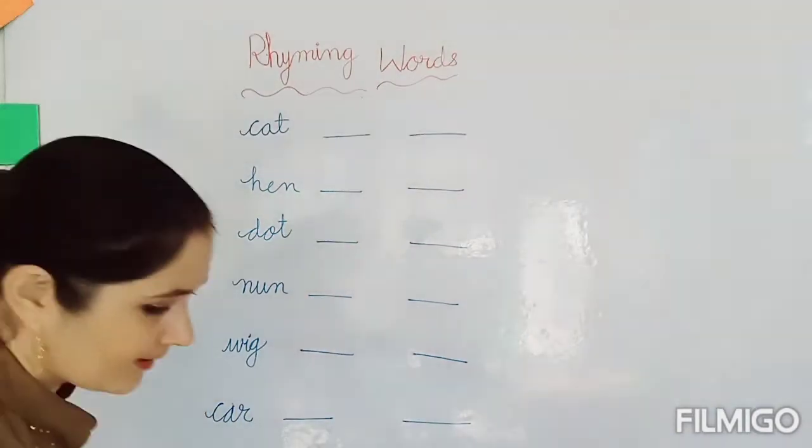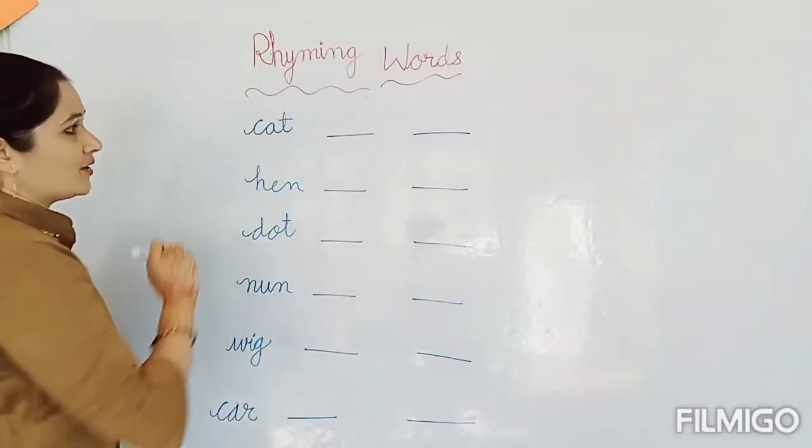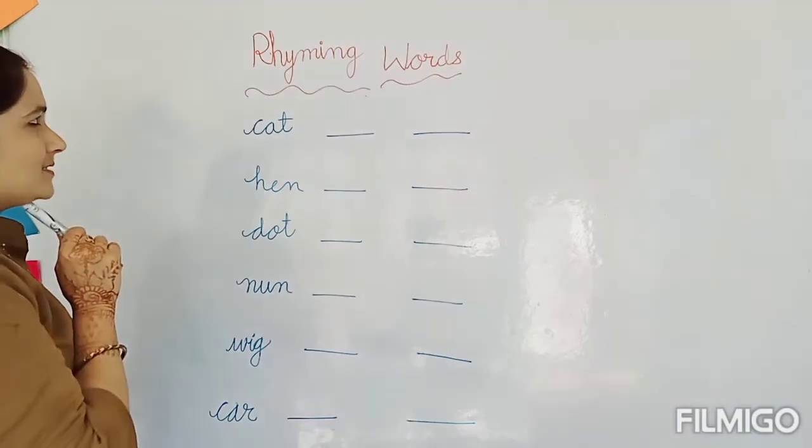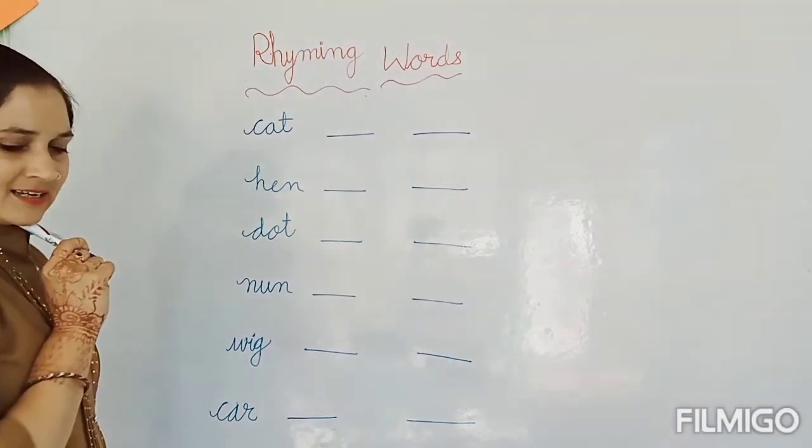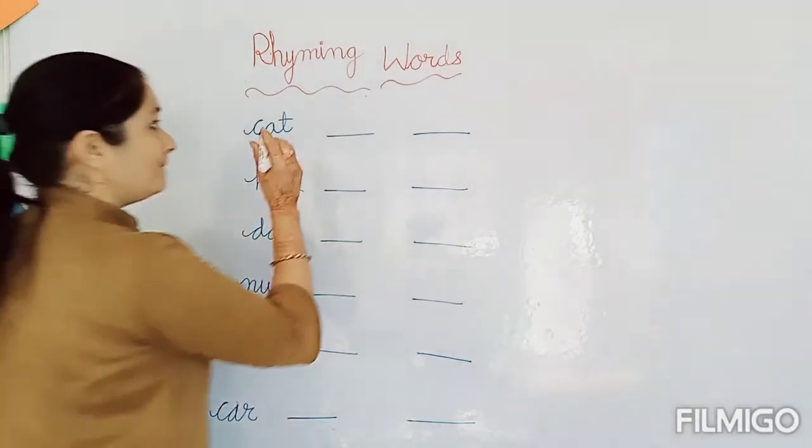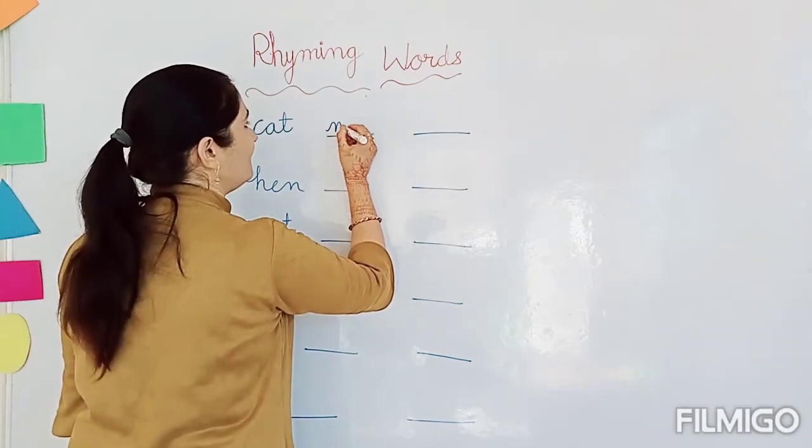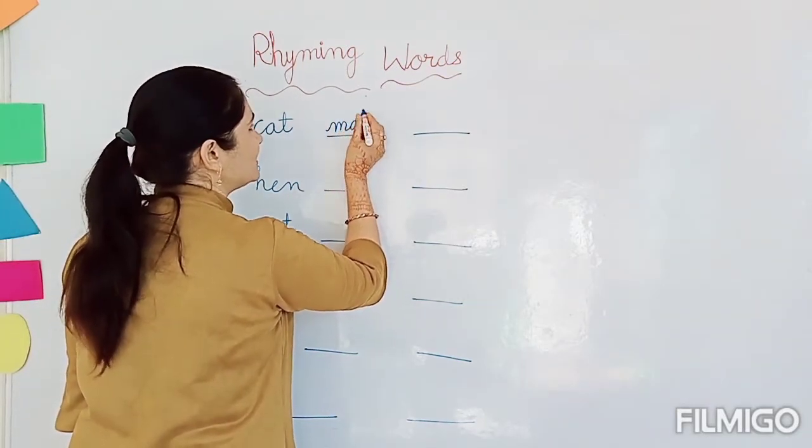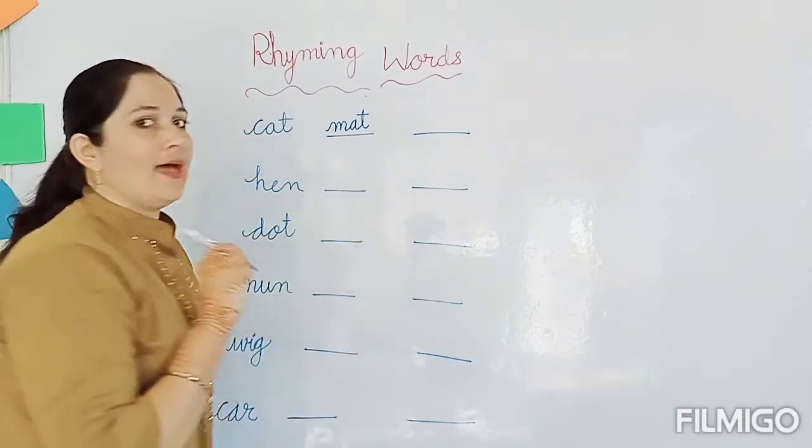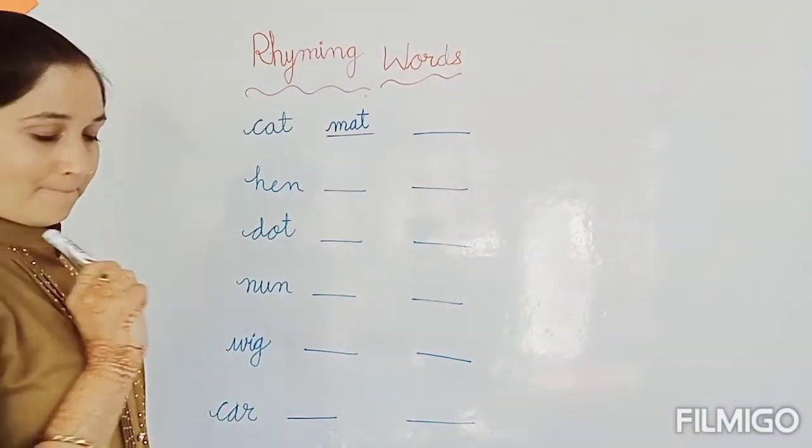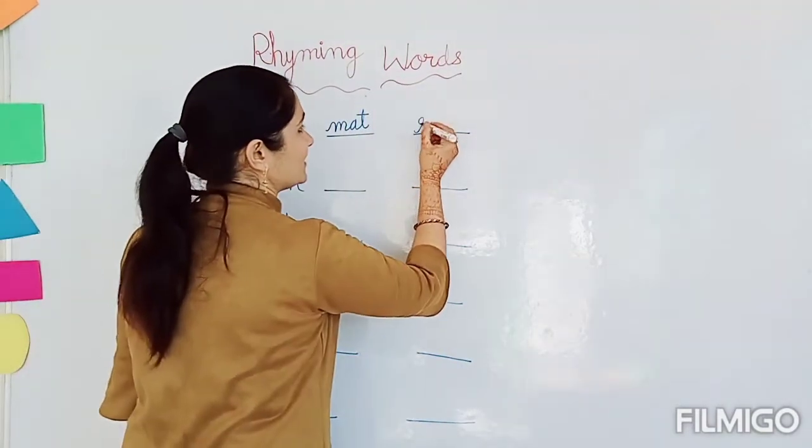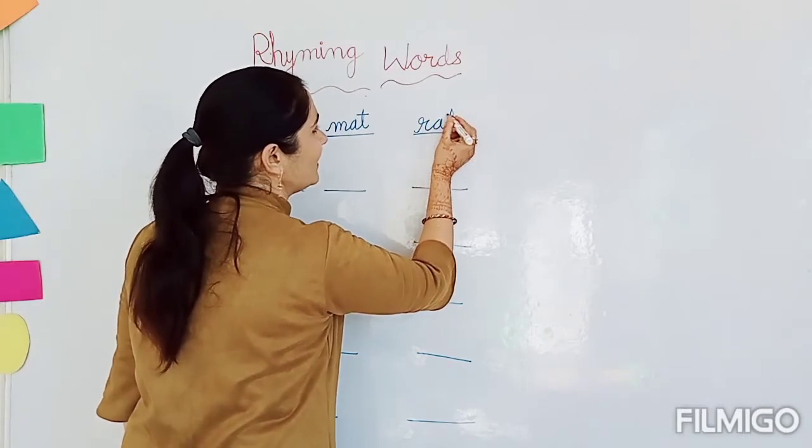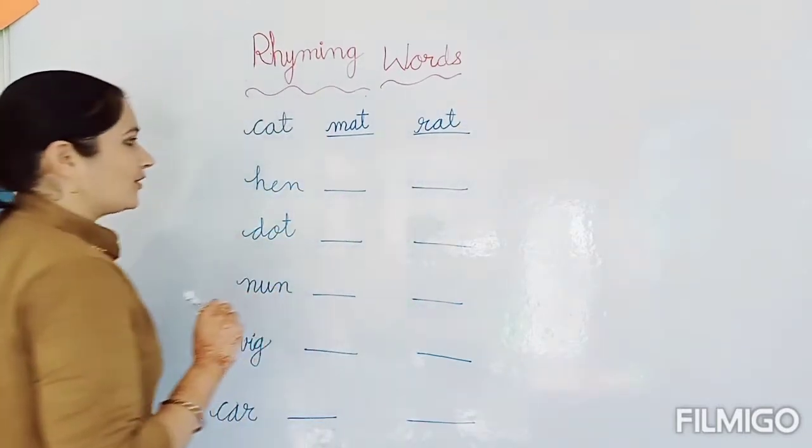First, word is cat. Okay? So what's the same sound? Cat. Yes. Mat. M-A-T. Mat. And same sound next. Mat. Rat. R-A-T. Rat. Okay?